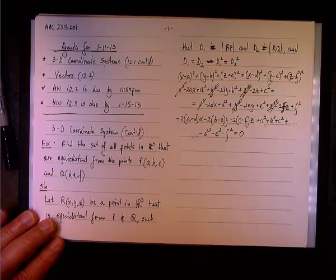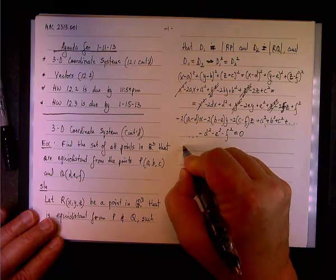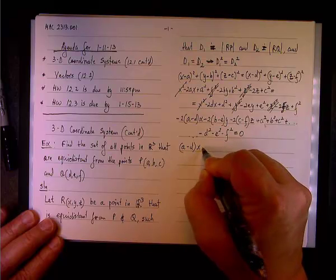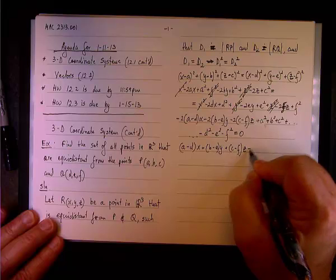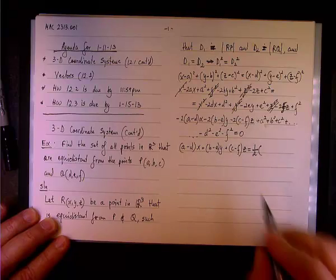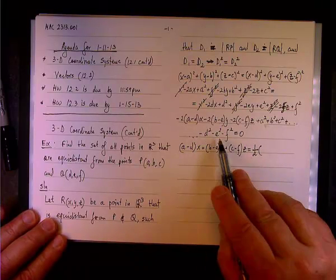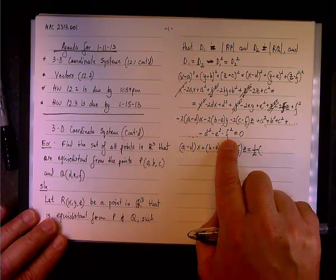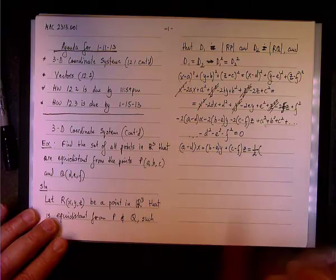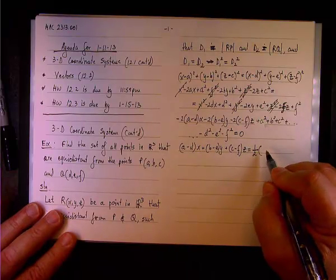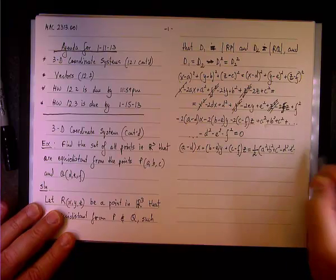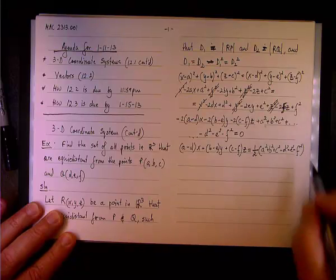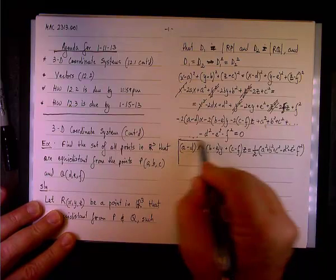And the equation, the generic equation, if we'll divide, if we'll divide everything by negative 2, we end up having this equation: A minus D times X plus B minus E times Y plus C minus F times Z, and on the right side, we'll have one half times, remember, we divide it by negative 2, so D squared, E squared, and F squared are positive, but if we move them to the right, they'll be negative. So, and this will be, those A squared, B squared, and C squared will be positive, so we have A squared plus B squared plus C squared minus D squared minus E squared minus F squared. Okay, and this is the generic solution.